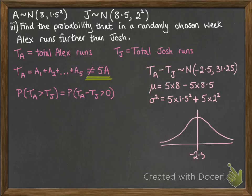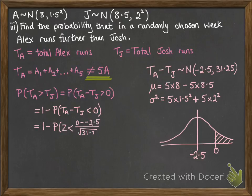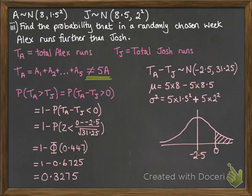So now that looks like this. We're looking for the probability that that number is greater than 0, so that's 1 minus it being less than 0. So this is the same as saying 1 minus the probability that Z is less than 0.447. So reading off our table, we can get the probability is 0.3275.